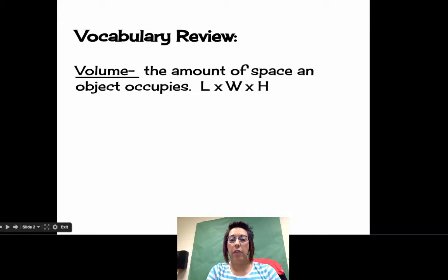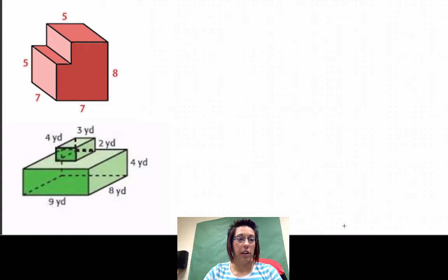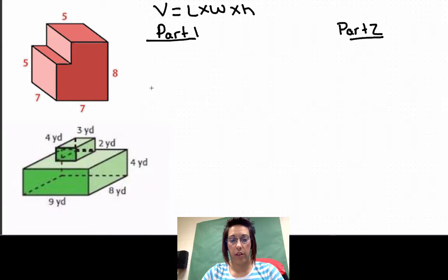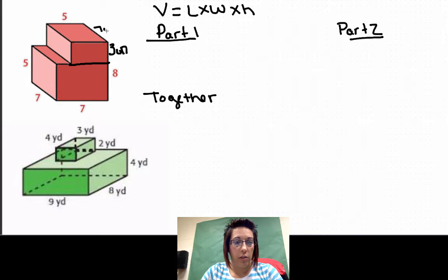Let's go ahead and look at a few of these composite figures and start calculating our volume. With these, volume equals length times width times height. This is what your paper should look like. We should say part one, part two, and then together. So part one, we are going to break this figure apart right here. If this side length is five and the total is eight, well eight minus five is three. That means this is three units tall and it is seven units deep.